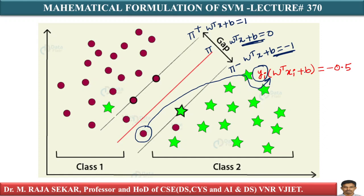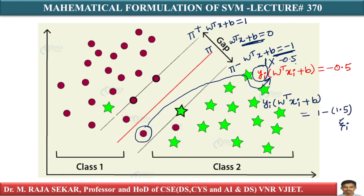For π, W transpose X plus B equal to 0; for π minus, W transpose X plus B equal to minus 1. Your yi is 1, and W transpose Xi plus B is minus 0.5. That is 1 into minus 0.5, which is minus 0.5, which can be written as 1 minus 1.5.